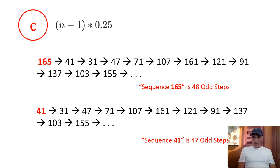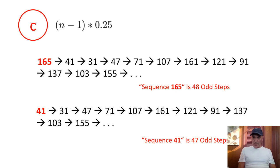This is the last slide. If each operation removes one step from every sequence, whatever the initial number is, what is the conclusion? A is one fewer steps, B is one fewer steps, C is one fewer steps. Therefore, all sequences must end. Thank you for listening. See you next time.